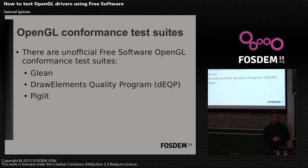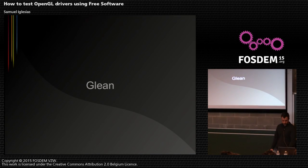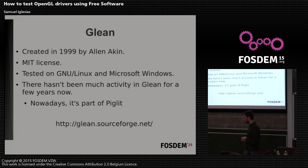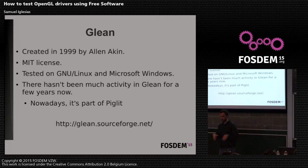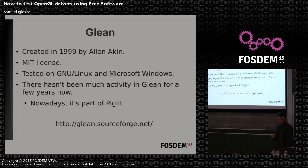For example, this talk is going to cover Glean, the Draw Elements Quality Program, and Piglit. The first one is Glean. Glean was created in 1999 by Alan Hacking and was one of the first conformance test suites out there for OpenGL. But during the last years there hasn't been much activity around Glean — it's kind of an abandoned project. The good news is Piglit copied it, and now the Piglit community is maintaining this project, improving the tests and adding new ones. As it is already part of Piglit, I'm not going to talk much about it.